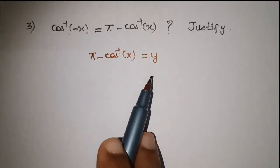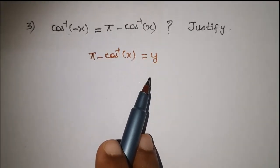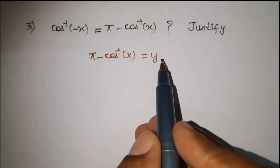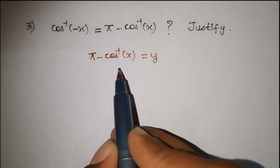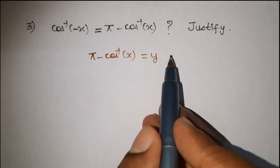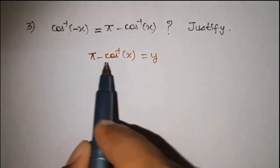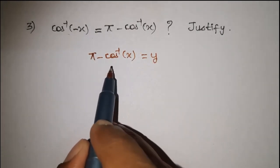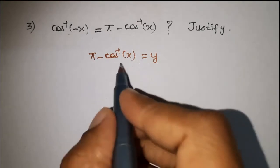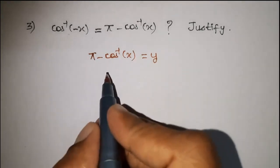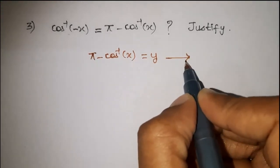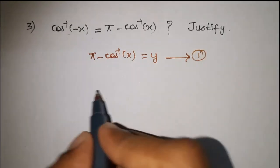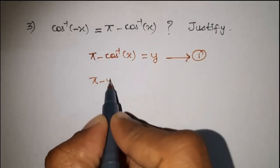Pi minus cos inverse of x is equal to y. Next, we bring y to the left hand side and cos inverse of x to the right hand side. Because cos inverse of x is negative, we bring it to the positive right hand side. Next, in the first equation, pi minus y.